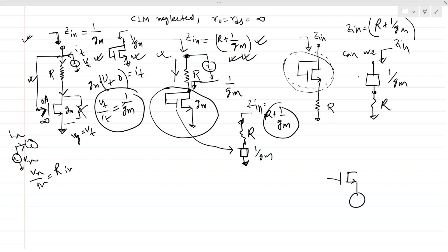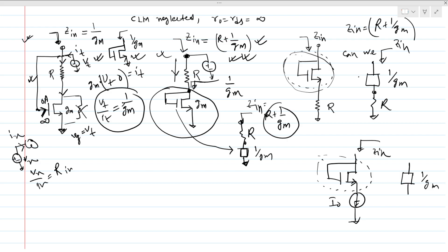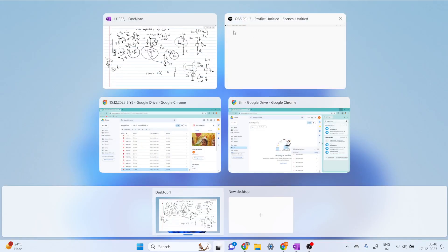Now let's look at an example. To find Z-in, we can see that this is 1/gm and this is also 1/gm. To find impedance, independent sources are made inactive. If there is a current source, it becomes an open circuit. So if we open this, when we apply any test voltage here the current will always be zero, meaning the impedance is infinite. One over gm plus infinite is infinite — so the impedance is infinite.